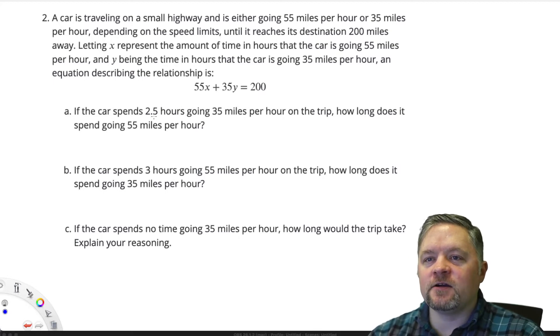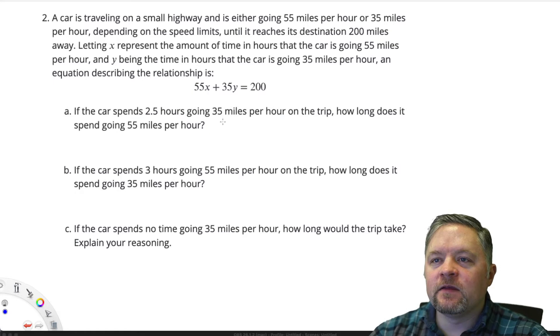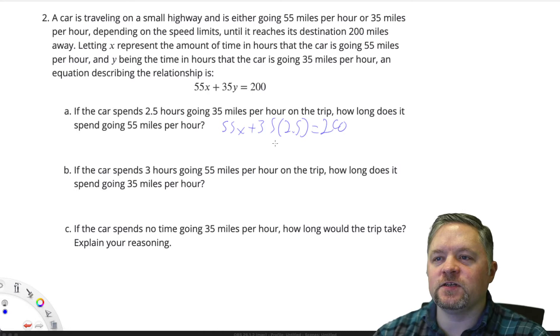If the car spends 2 and a half hours going 35 miles per hour, how long does it spend going 55? Well, 55x plus 35, and we spent 2 and a half hours going 35, times 2.5, equals 200. We just have to solve this for x.